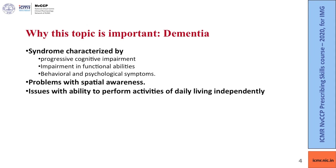Dementia is a syndrome characterized by progressive cognitive impairment, impairment in functional abilities, and behavioral and psychological symptoms. There are problems with spatial awareness and issues with the ability to perform activities of daily living independently.